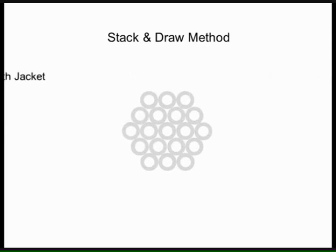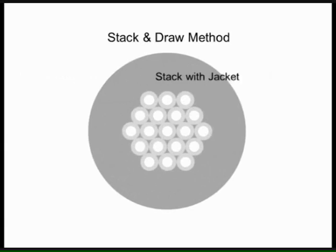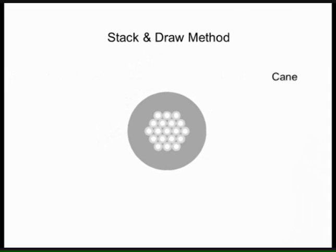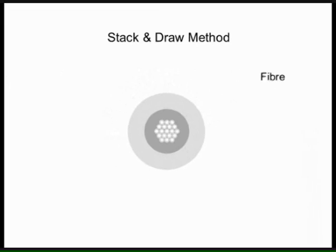We take this stack and put it inside something known as a jacketing tube which is another glass tube. This whole stack is then put up on the top of the fibre drawing tower and drawn down into something called a cane. We then take a cane, put that inside a further jacketing tube, return it to the tower and draw the whole structure down into fibre.